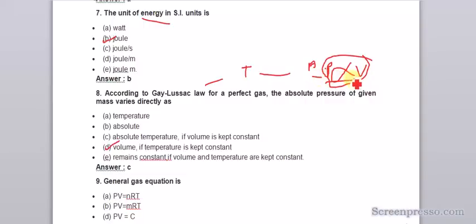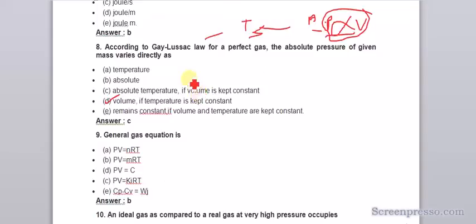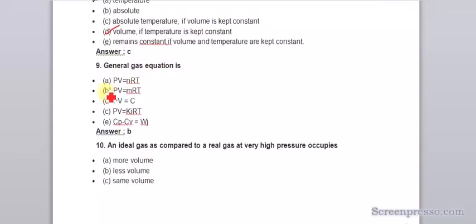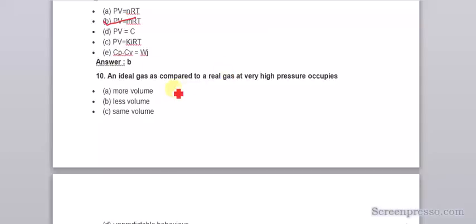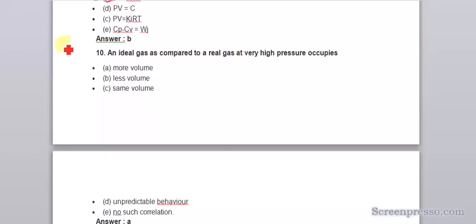The general gas equation is PV equals MRT. The ideal gas compared to a real gas at very high pressure occupies more volume.